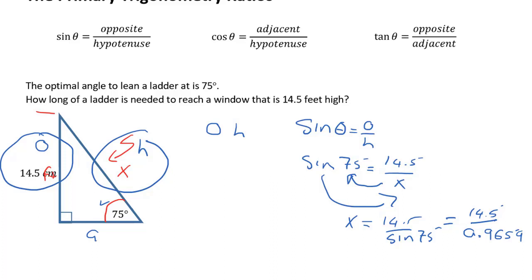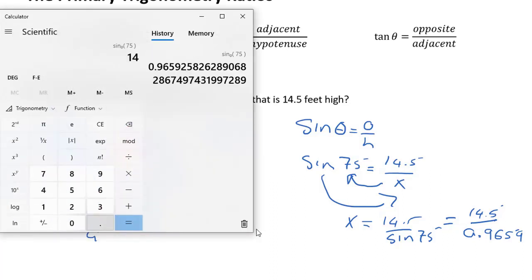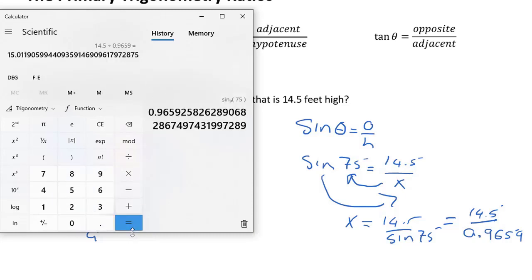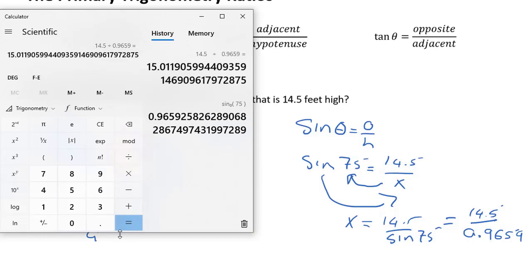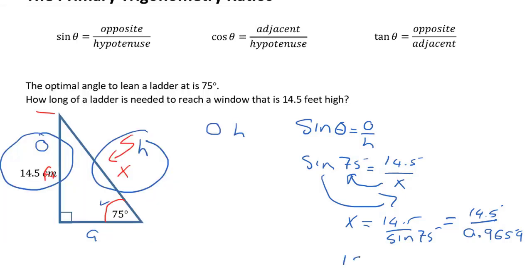Pulling up the calculator one more time, I'm now going to divide 14.5 by 0.9659. And I get 15.0 feet. The ladder must be 15.0 feet.